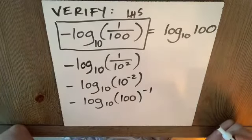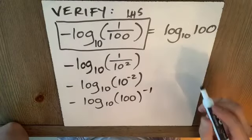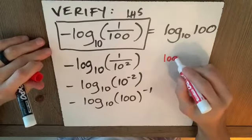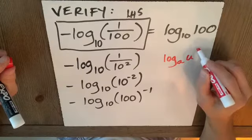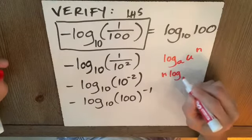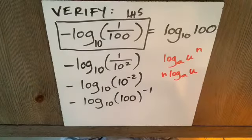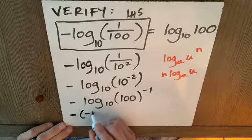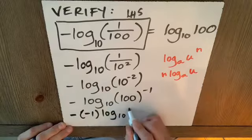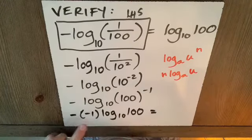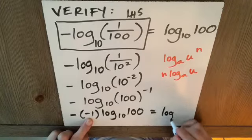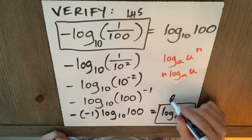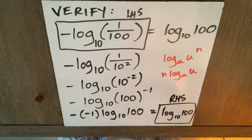All right. Now, what? Well, I know I can use the power property, which says, if you don't remember, if we have log base a of u to the n, we can write this as n log a u. So, in other words, this little piggy can go to market here and we'll have negative times negative 1 log base 10, 100. Which, of course, negative negative 1 is 1 gives us log base 10, 100. By golly, I've reached the right-hand side and I've showed all my steps. What a great proof that was.